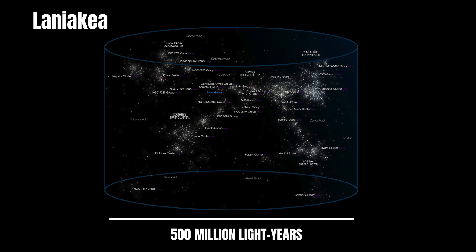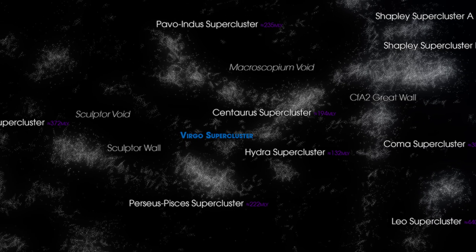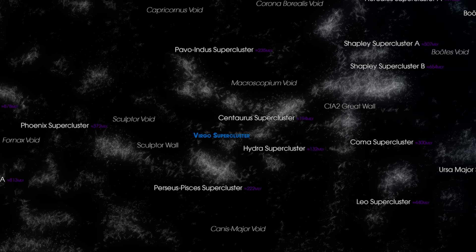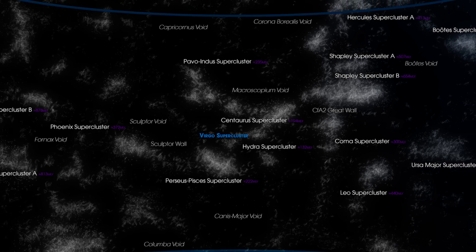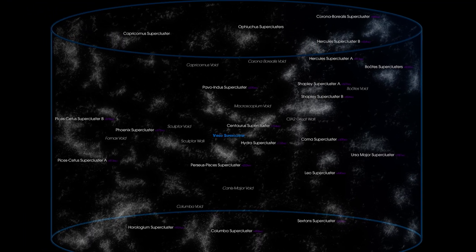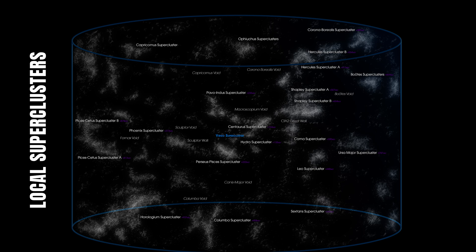Laniakea, our home supercluster. Its name, meaning immense heaven in Hawaiian, is fitting for a structure that stretches over 500 million light-years and contains the mass of 100 million billion suns. This gravitational masterpiece weaves together galaxy clusters, superclusters, and countless celestial bodies, all interconnected in a vast cosmic web of attraction and motion. At the heart of Laniakea lies the Enigmatic Great Attractor, a mysterious region of space exerting a tremendous gravitational pull on the galaxies within this supercluster. Though its true nature remains uncertain, it serves as a stark reminder that our universe is shaped by forces far beyond our full understanding.